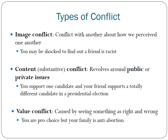We have various kinds of conflict. Image conflict is when there is conflict with another about how we perceive one another — you might be shocked to find out a friend is racist, or a friend is a different political party than you are, or has a different perspective on religion. Then there is content or substantive conflict, which revolves around public or private issues — you might support one candidate and your friend supports a totally different candidate in a presidential election.